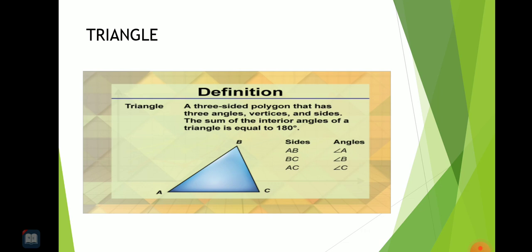Then comes triangle. A three sided polygon that has three angles, vertices and sides is called a triangle. The sum of the angles of a triangle is equal to 180 degrees.